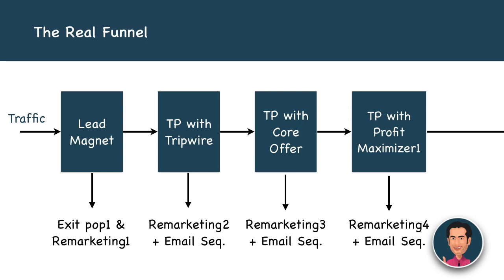The very first thing in the funnel is the lead magnet — you give it for free and collect the customer's name, email, phone number, and all data you can, so you can get back to them whenever needed. The next thing you have is a thank-you page — but this time, a thank-you page with a tripwire. If the person is interested in the tripwire, great. If not, remarket to them on Facebook, Google Display Network, do emailers — do everything possible to get that person back to claim the tripwire.